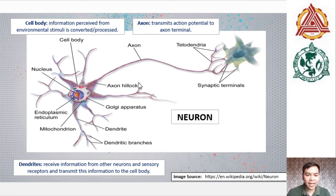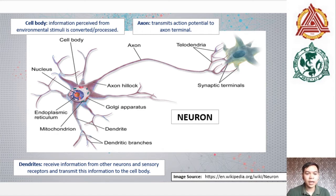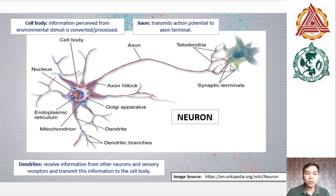Next is the axon hillock, the region where the plasma membrane generates nerve impulses. From the soma is another projection called the axon, which transmits nerve impulses away from the soma down its length to the axon terminal. Another structure found in the axon is the telodendria — divisions or branches formed by the axon. At the end of each telodendron is an axon terminal, which connects with a variety of other structures including dendrites, cell bodies, axons of other neurons, or non-neural tissue such as muscle or glandular tissue.